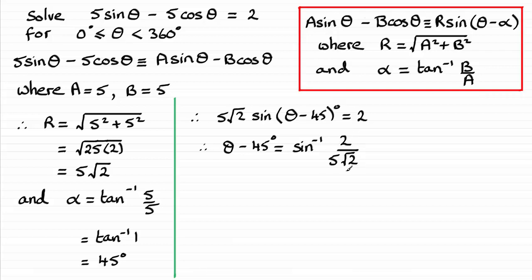And at this point, if we take the inverse sine of 2 over 5 root 2, you get that theta minus 45 degrees is equal to 16.429 and so on degrees. And with this, to get other solutions, I'd want to sketch a quadrant diagram. You should be familiar with quadrant diagrams. If not, do check out my tutorials on this.